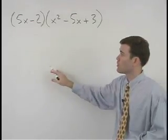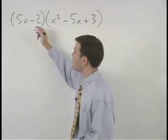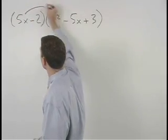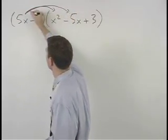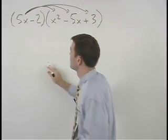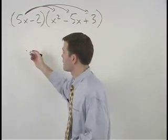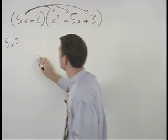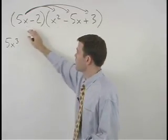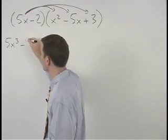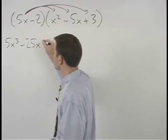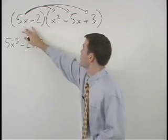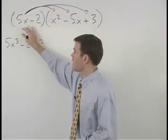So here we would first distribute the 5x through all three terms inside the parentheses to get 5x to the third minus 25x squared plus 15x.